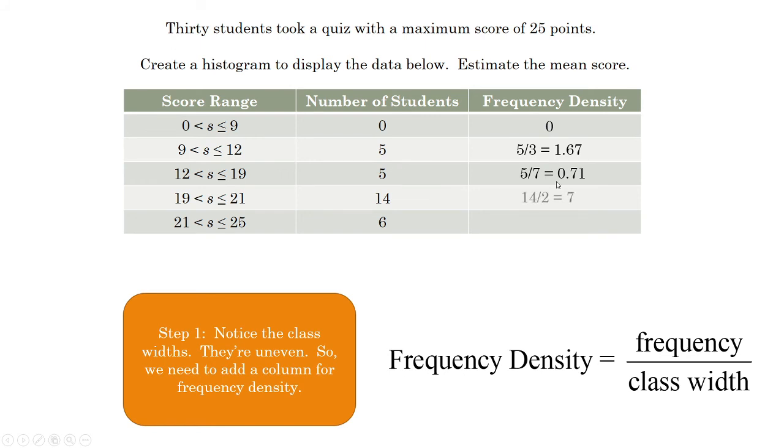We have a class width of 2 and a frequency of 14, so 14 divided by 2 is 7. And then 6 divided by 4 is 1 and a half, 1.5. So these are our frequency densities, and this will be the scale on the y-axis, and this over here, the classes, will be the x-axis.